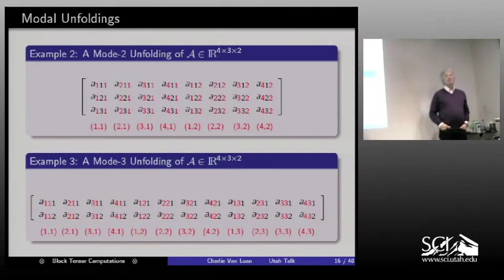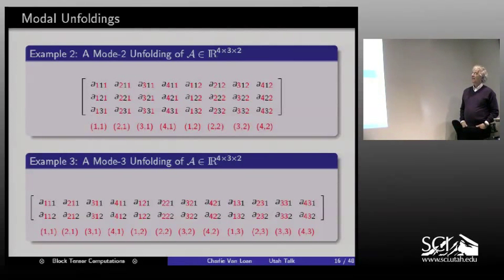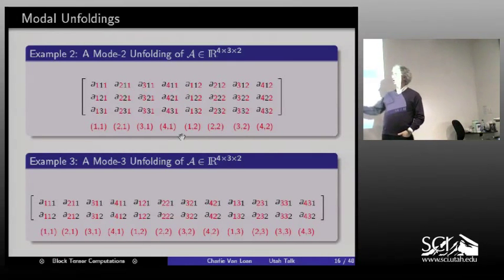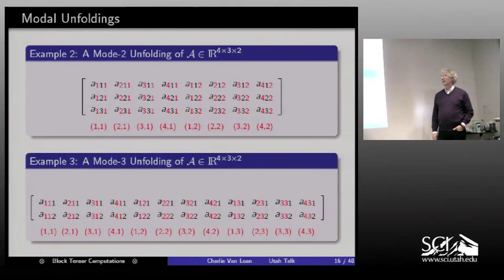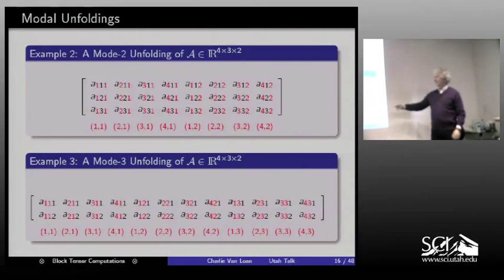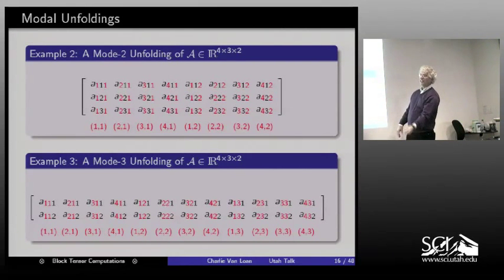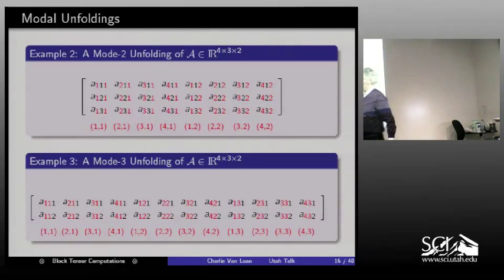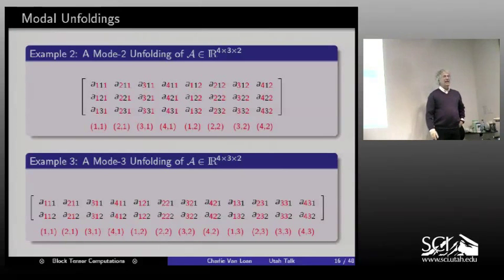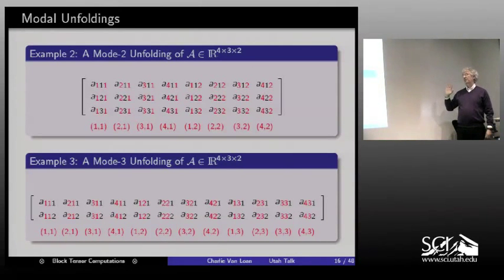A question about going between orders of tensors: between a second-order and a first-order tensor you have column-major and row-major order. Going from a third to a second, the ambiguity increases. These are canonical orderings — if you look at how arrays are typically stored, it would be in this generalized column-major order. As you visit the indices from left to right, they vary less in frequency. There is a lot of choice, and proximity is very important.